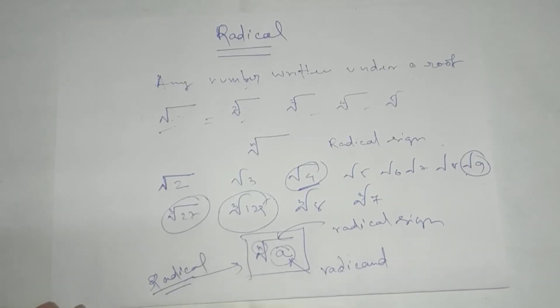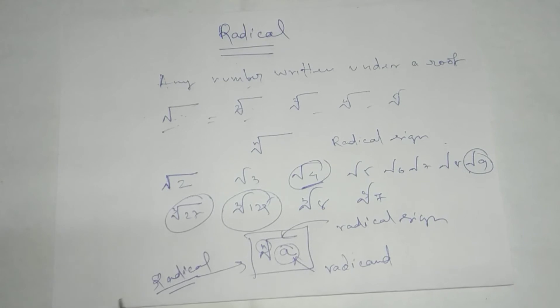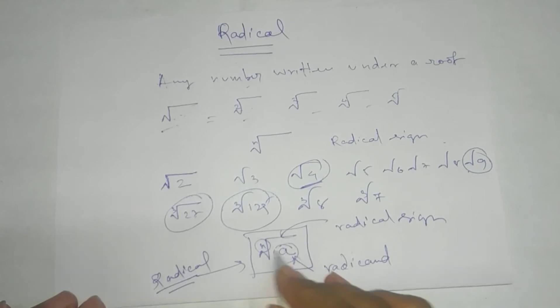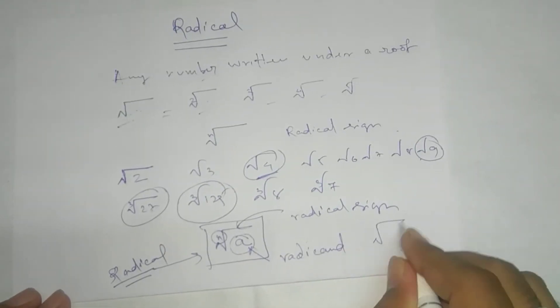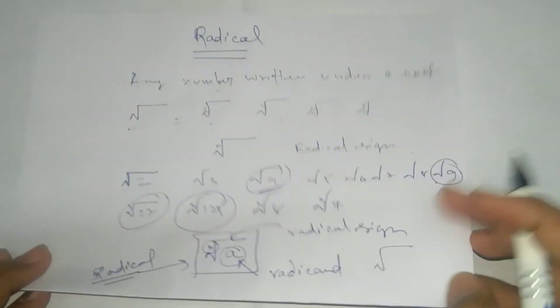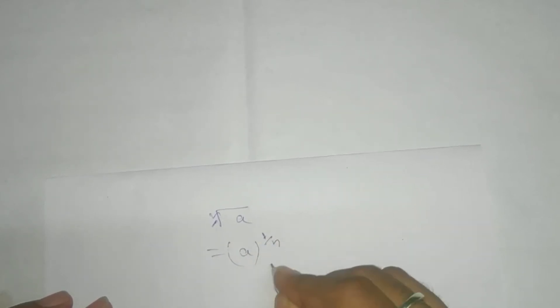And if we go for this one, this is your index or exponent. And this can be written in this form. Here we don't have. This can be written like this. See, when we represent this way, we will not say this is your radical.